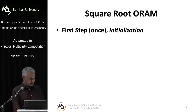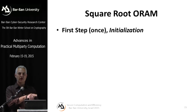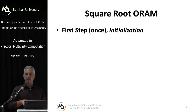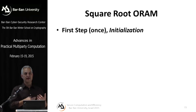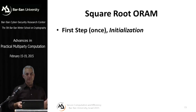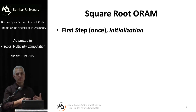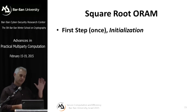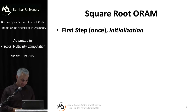The first ORAM construction is the Square Root ORAM, where the overhead of accessing an item is O(√n). To access an item, we read O(√n) items from the server. If n is a million, we only need to read about 1000 items instead of a million. Here's how it works. In initialization, suppose we have m items stored at the server encrypted. We also include √n dummy items and put aside space for √n shelter slots.